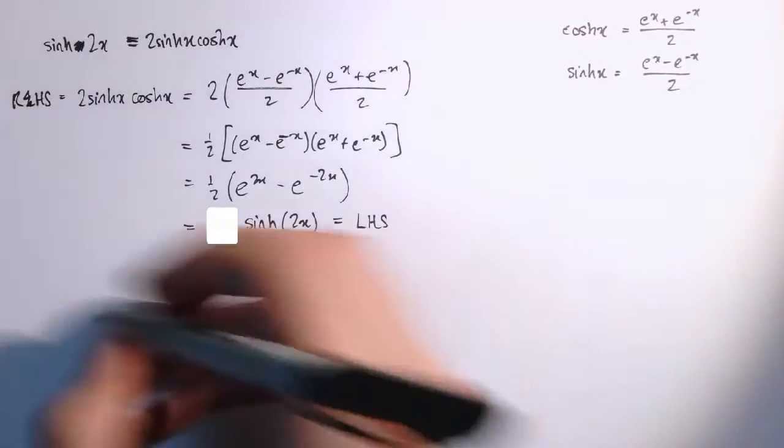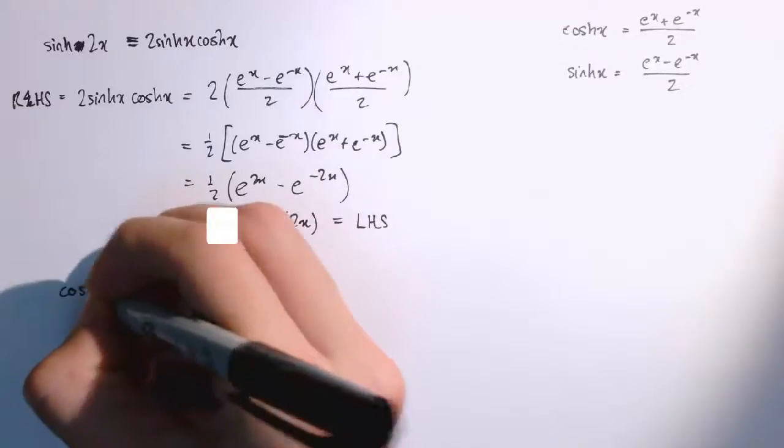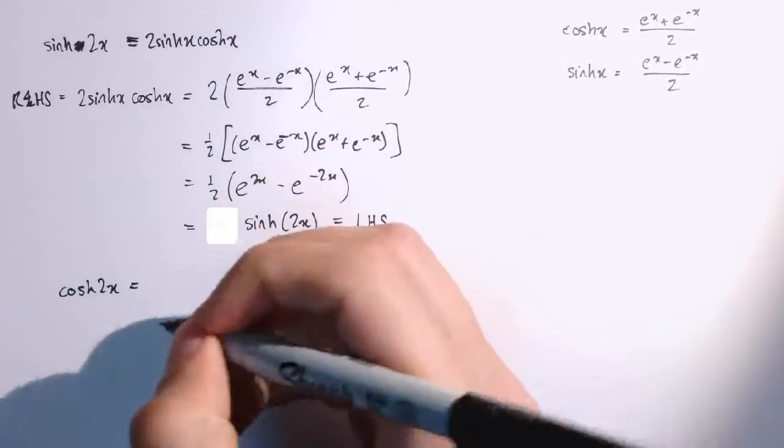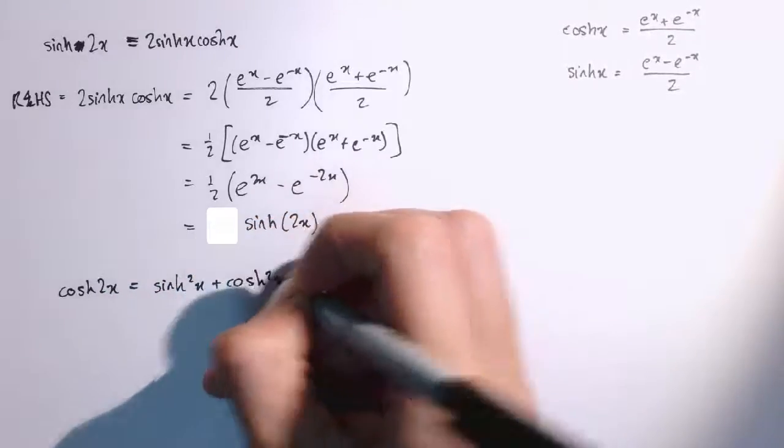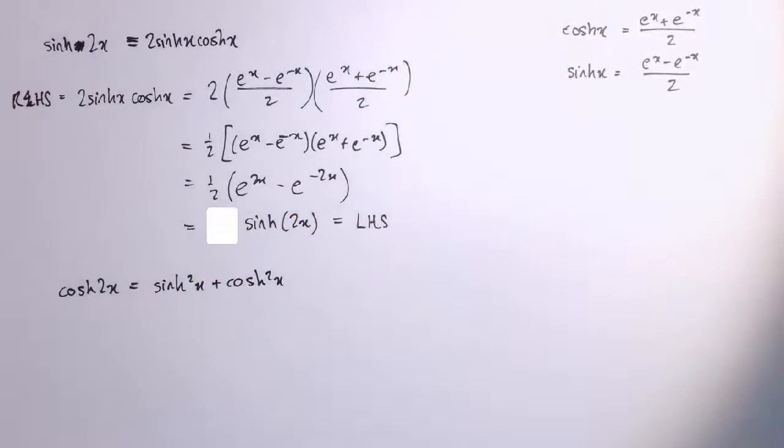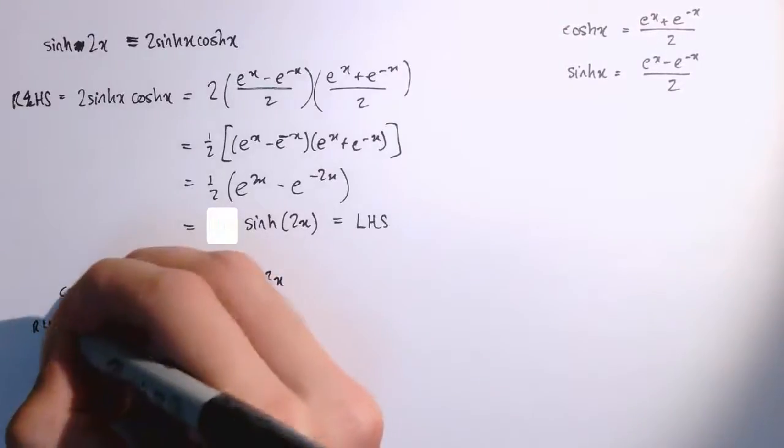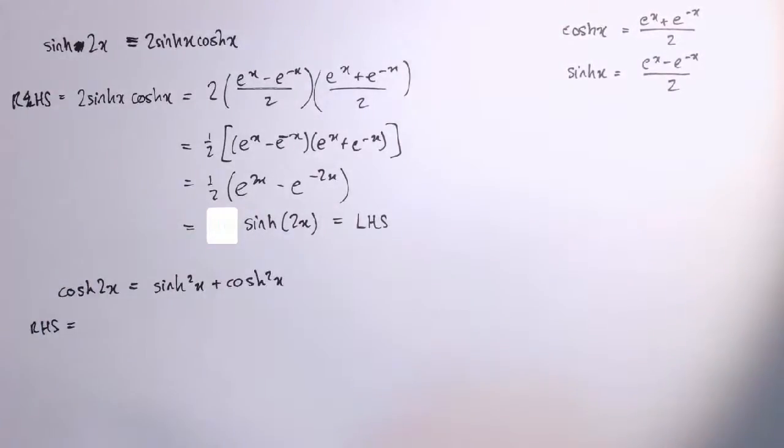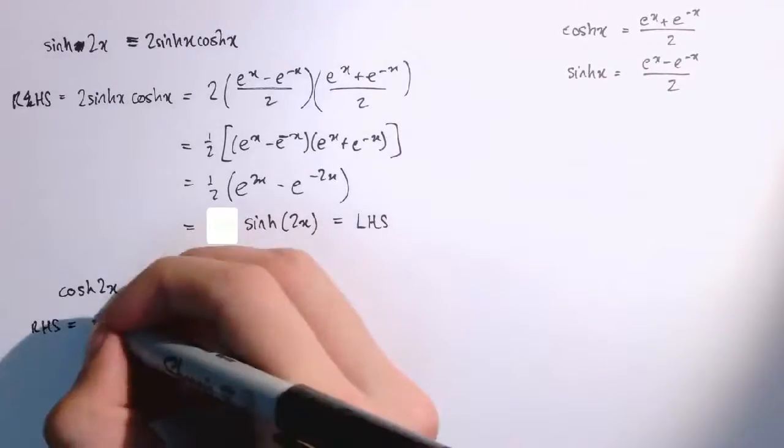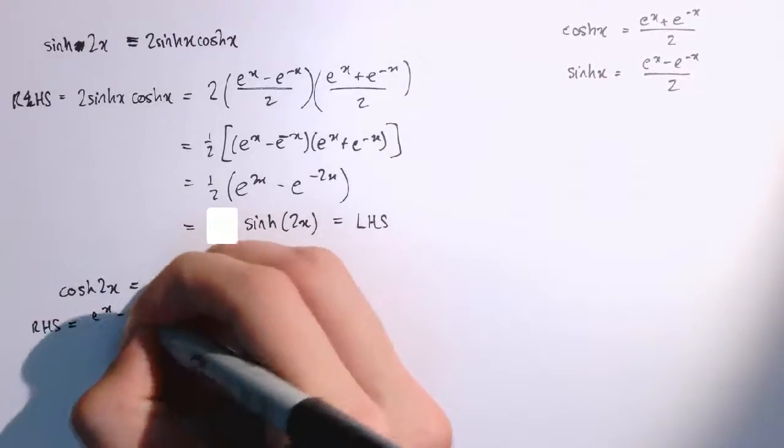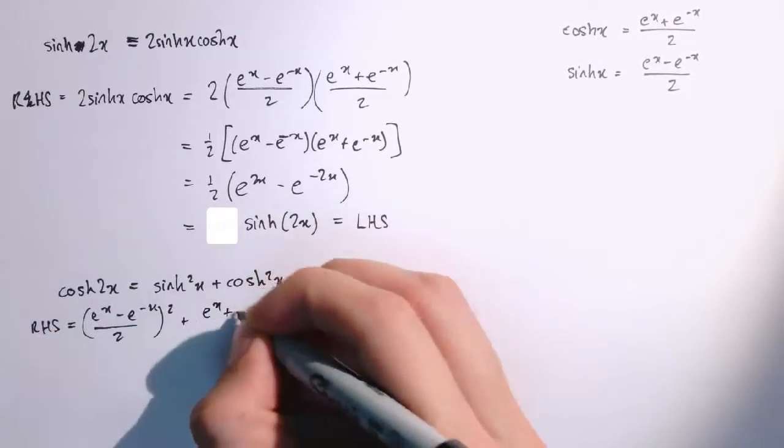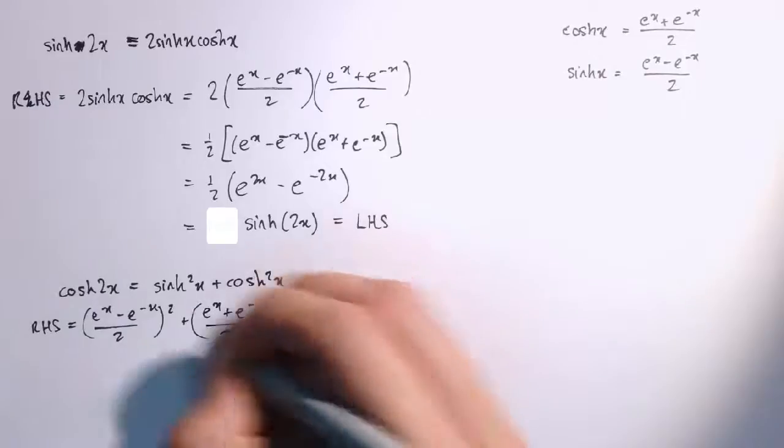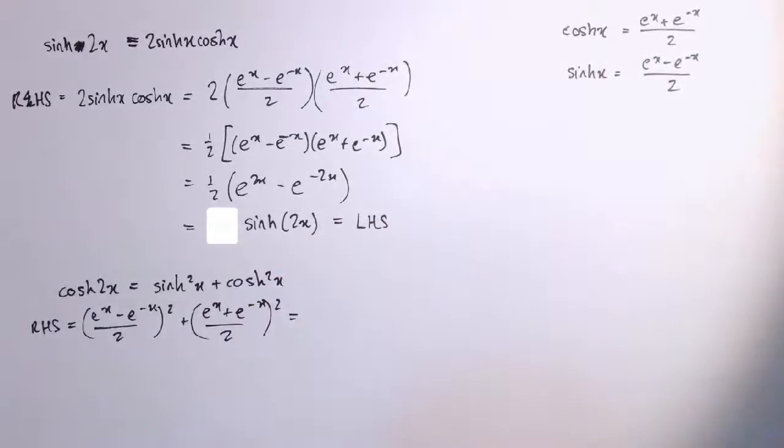The next one I'm going to prove is that the equivalent result for cosh, which is that cosh of 2x is equal to sinh squared of x plus cosh squared of x. It goes in a very similar way, so if I start with the right-hand side, that's sinh squared plus cosh squared, so that's e to the x minus e to the minus x over 2 squared plus e to the x plus e to the minus x over 2 squared.